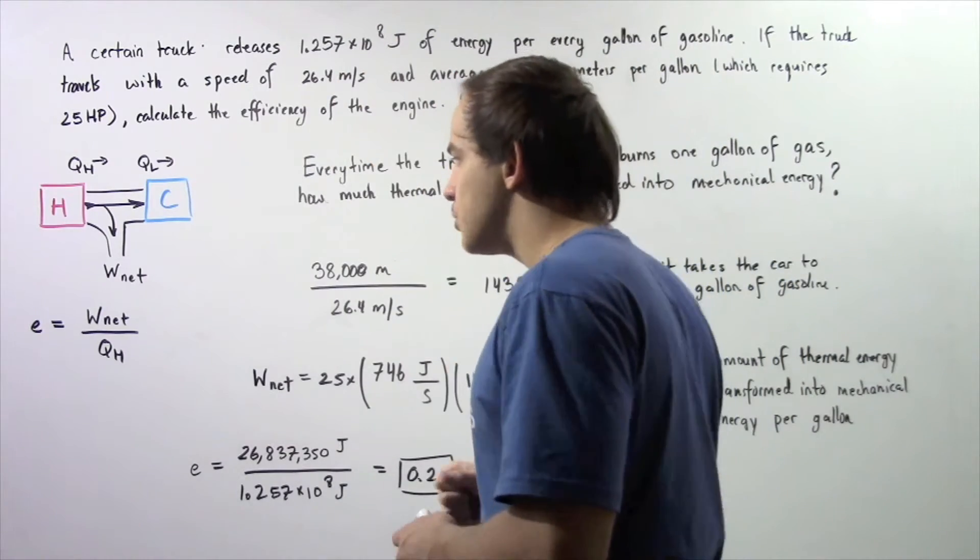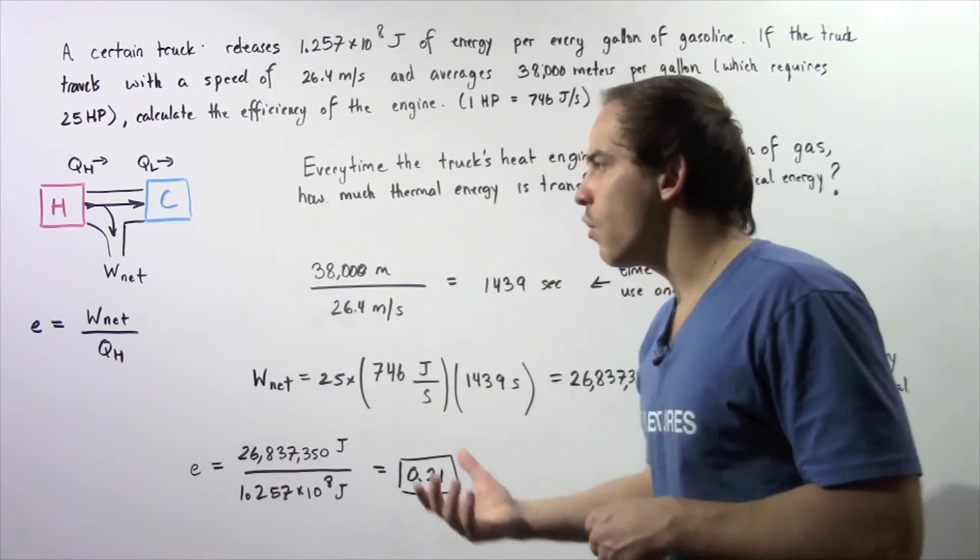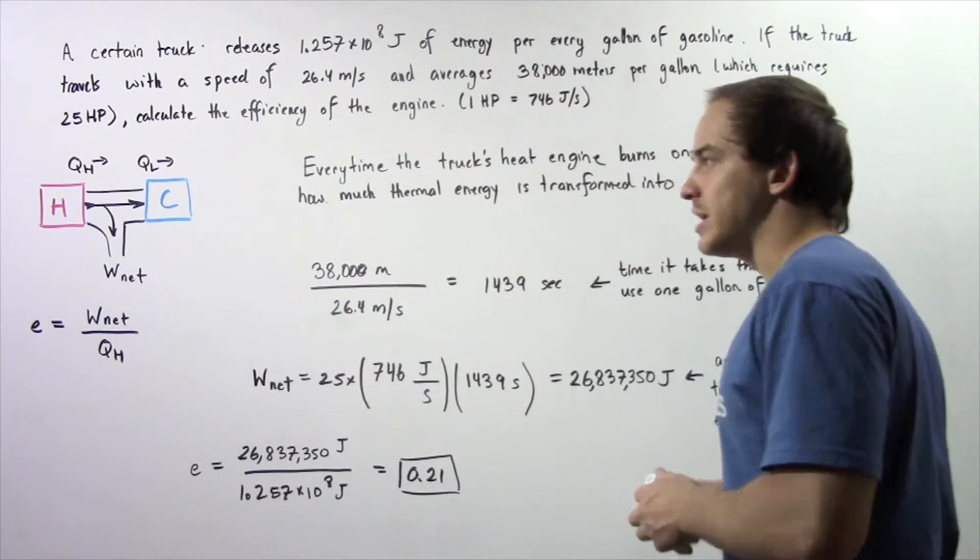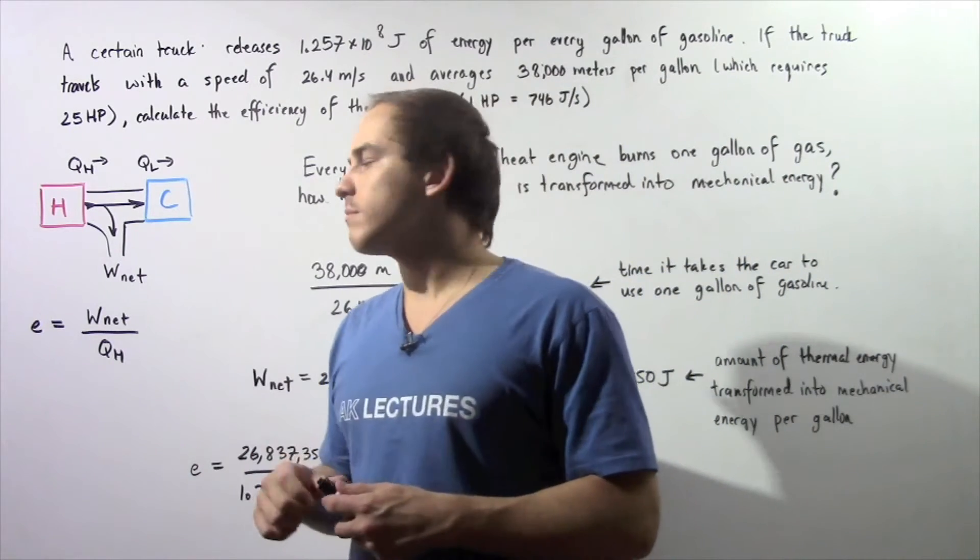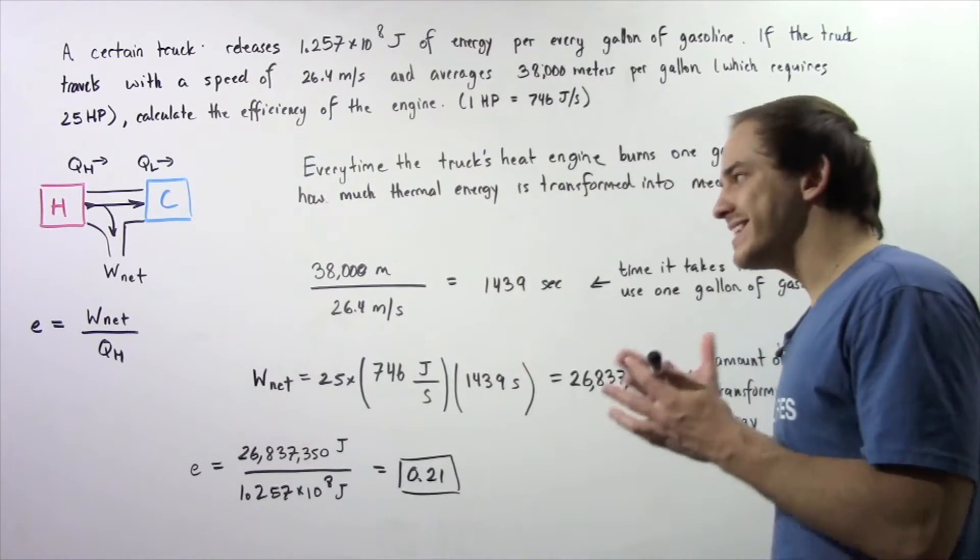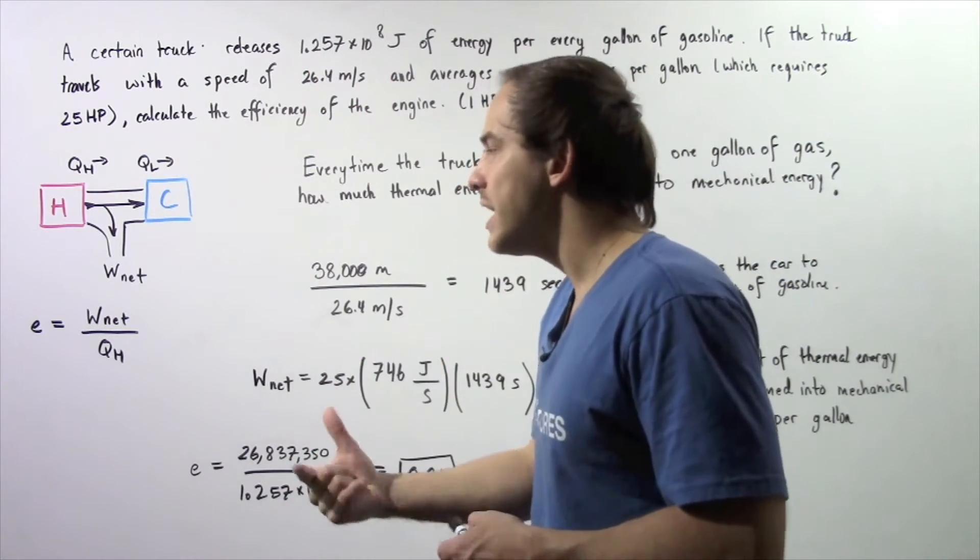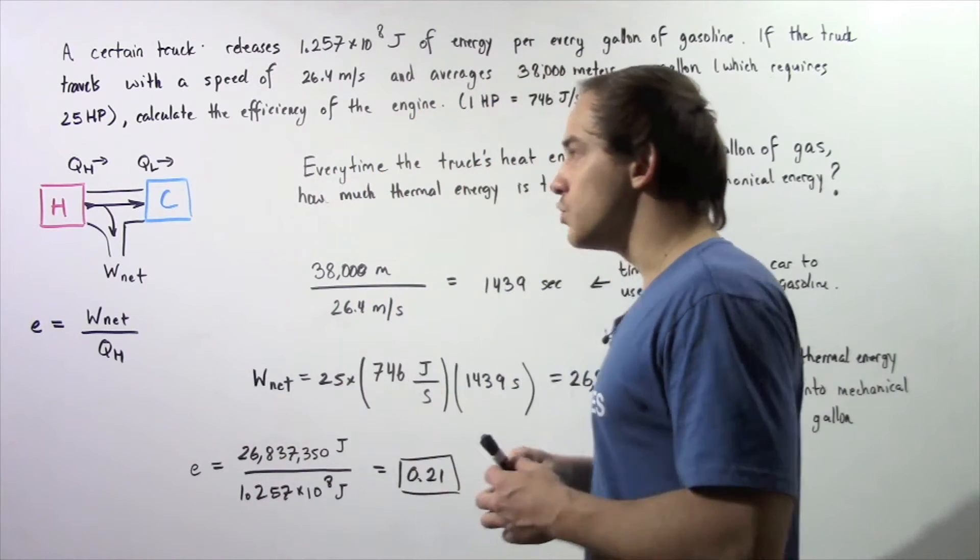Now some of this energy is transformed into mechanical energy. It's transformed into the network. The rest of that energy is released, is discharged into the environment in the form of heat. We essentially want to calculate how much of this energy is transformed into mechanical energy that the car could actually use.